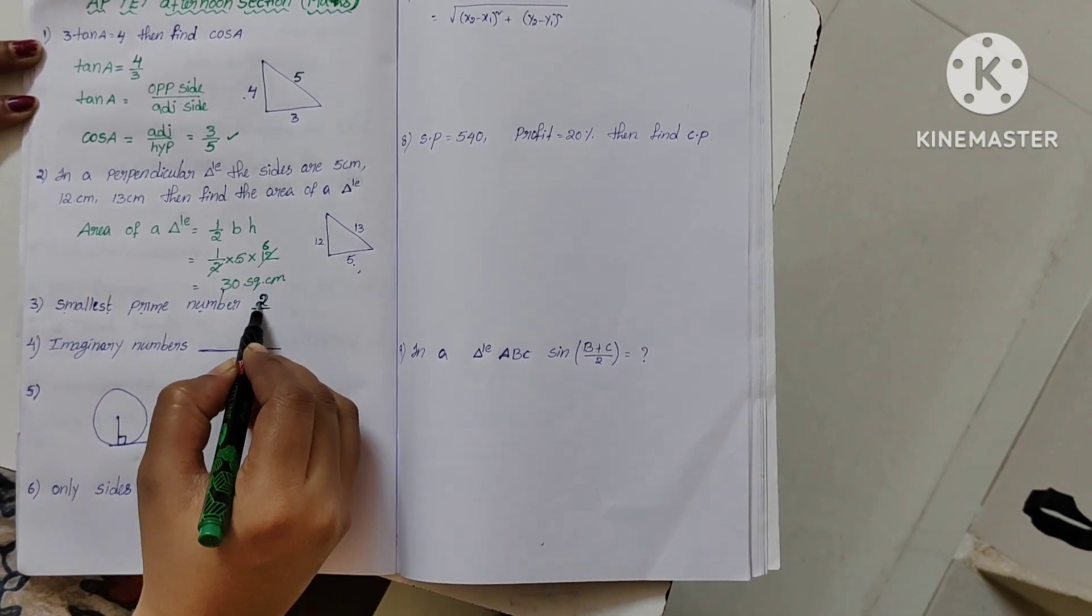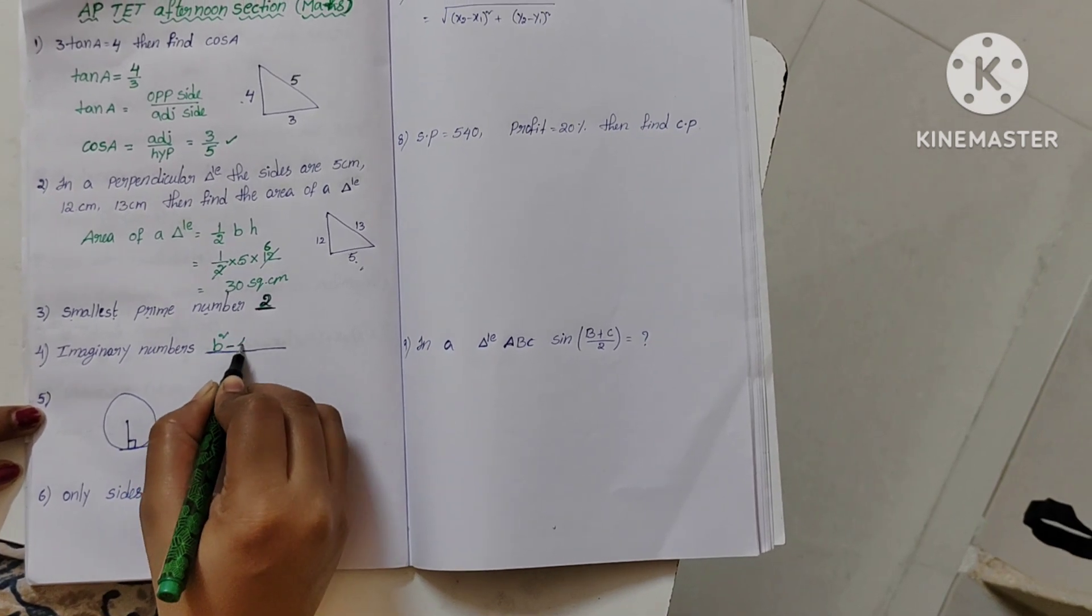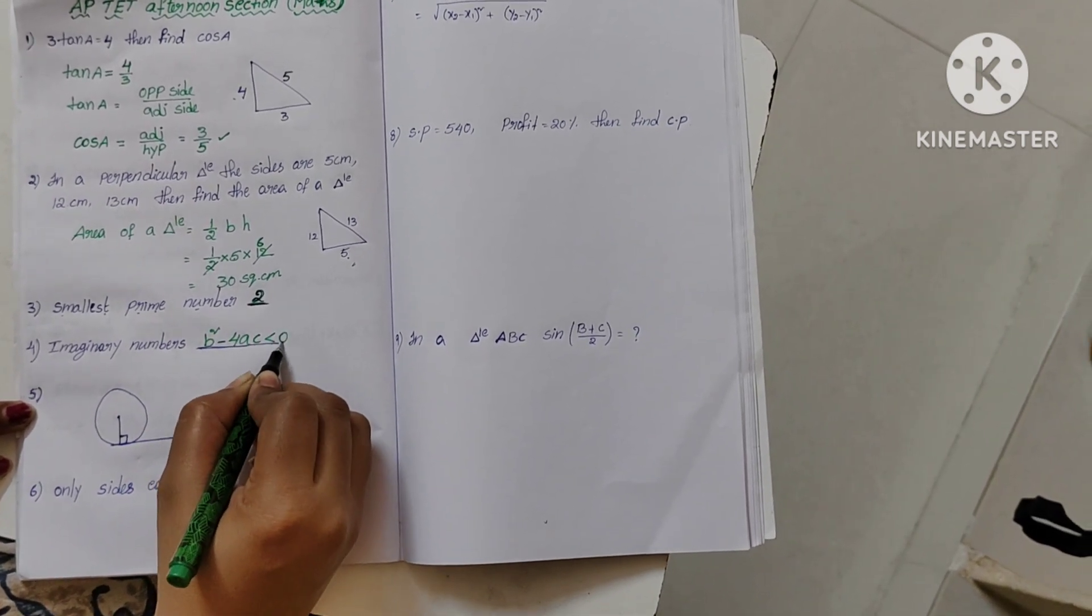Smallest prime number: 2. And imaginary numbers - in 10th class, b square minus 4ac less than 0.